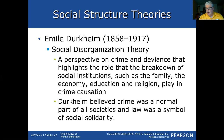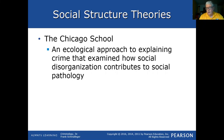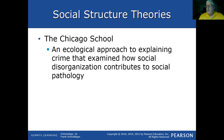Durkheim believed that crime was a normal part of all societies, and the law we bring in was a symbol of our social solidarity — we determine what the law is going to be, whether by consensus or through the political process, and that's how we bring our societies together. The Chicago School was a group of social scientists and criminologists based in Chicago who looked at this ecologically, explaining crime by examining how social disorganization contributes to what they called social pathology.